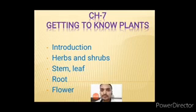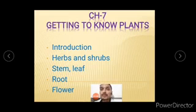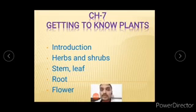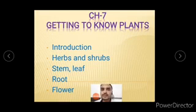We will mainly discuss herbs, shrubs, and trees. Then after, we will discuss the stem, leaf, root, and flower — because these are nothing but the parts of the plant. Leaves have different kinds of structure. The stem and root are the foundation — due to roots the whole plant can stand still. All plants have parts; some plants don't have stems, only leaves, and some plants don't have flowers. So varieties of plants are there having different structures.